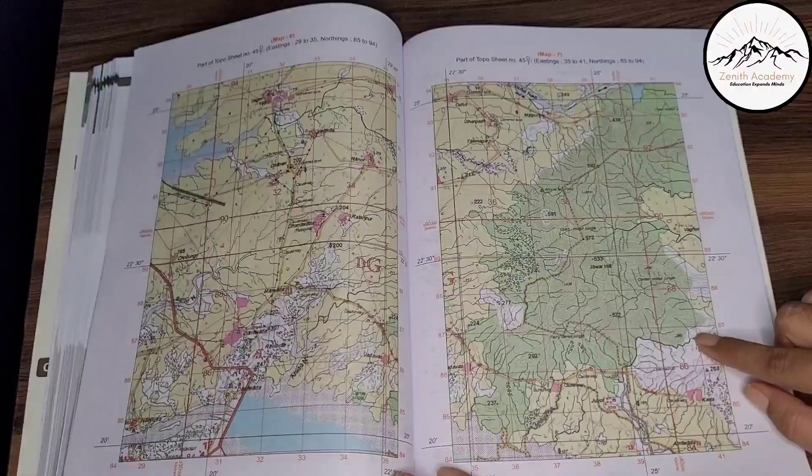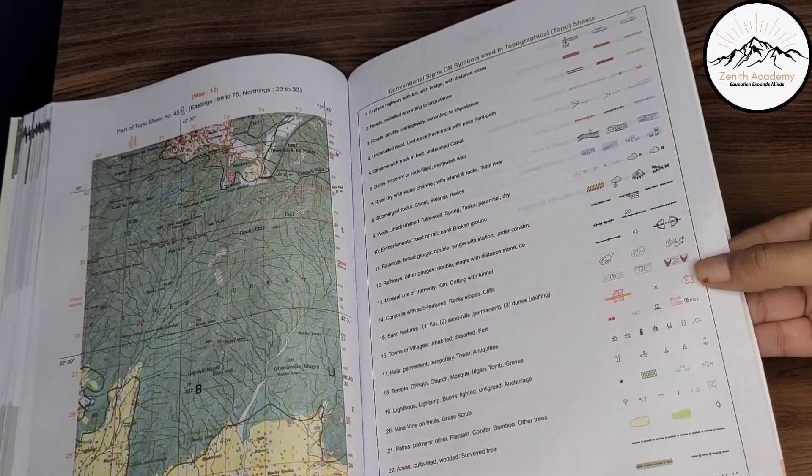Now, you see, all the maps are given. Very nice print. Everything is very clear. So these are the different maps in the end for your topography. In the end, they have also given you all the conventional signs or symbols used in topo sheets. These pictures are also very clear.